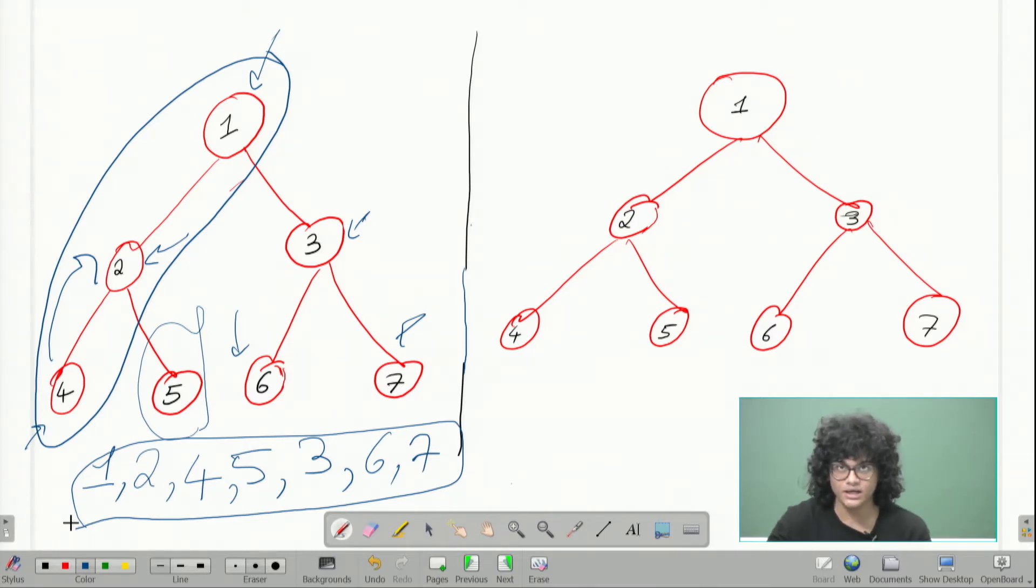Whereas for BFS, which states that we explore the breadth before the depth, you see, there are certain levels in this tree. This is level zero, level one, level two. So we want to explore these levels before moving on to the next level.